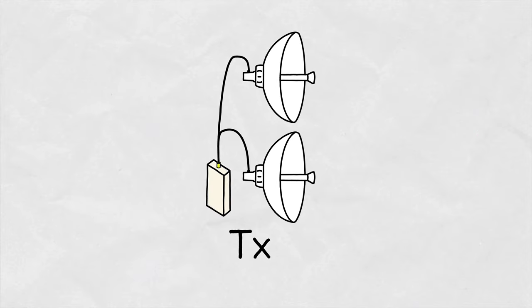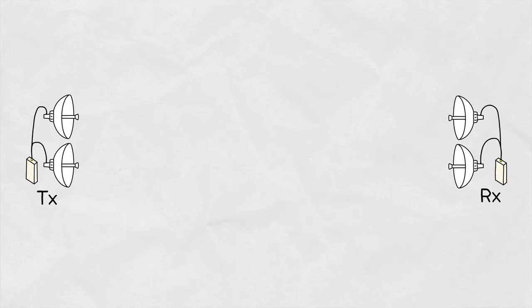Increasing the number of antennas on either or both sides of a wireless link creates multiple possible paths for the signal to arrive at the receiver. There are a number of benefits this brings about.